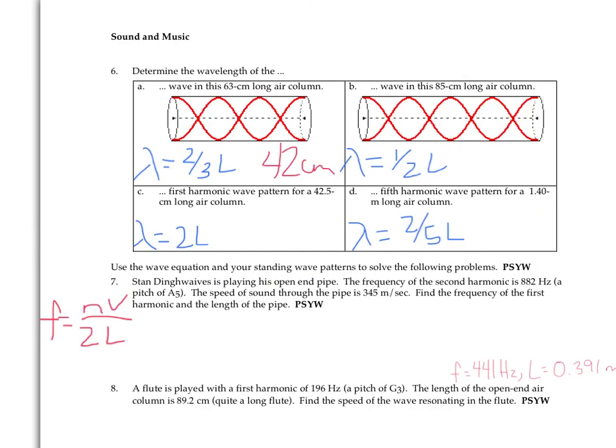Similarly with part B, if it's an 85 centimeter air column, the wavelength is half of that length. You have 42.5 centimeters for the wavelength in part B. Part C, the wavelength is twice the length at first harmonic, so I've got to take 42.5 and multiply it by two, which should give me 85 based on what we just did in part B. And then for part D, the 1.4 meter long air column represents a two-fifths length to wavelength conversion, so multiply that by two-fifths, and you get a wavelength that's equal to 0.56 meters or 56 centimeters.